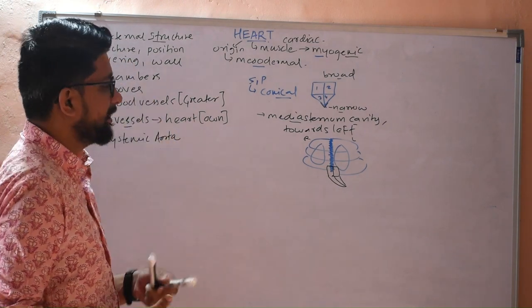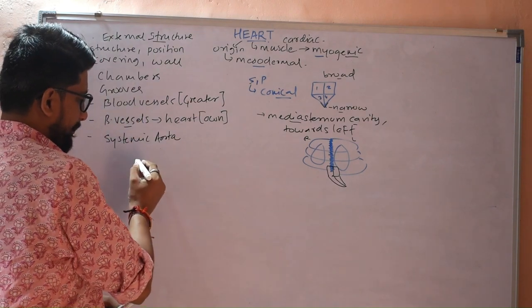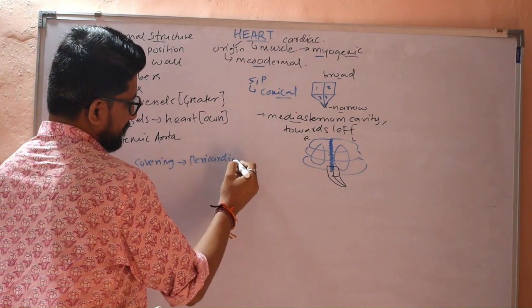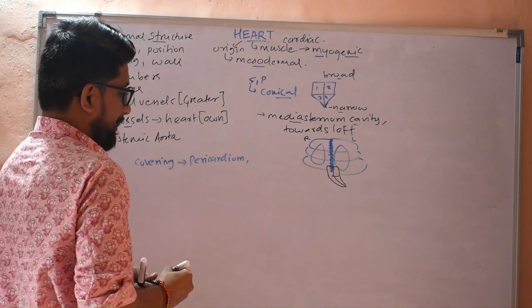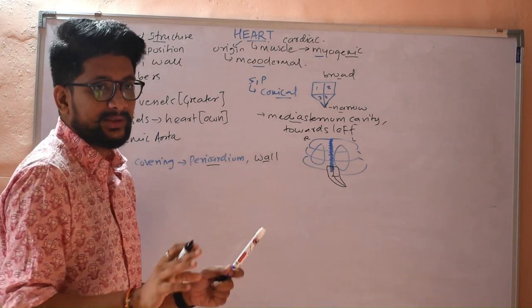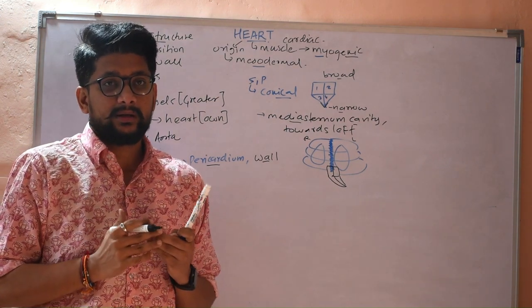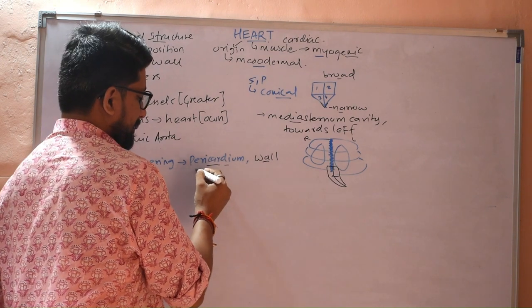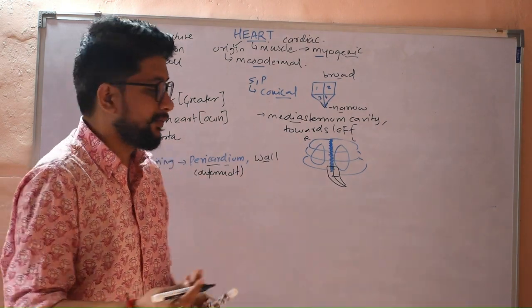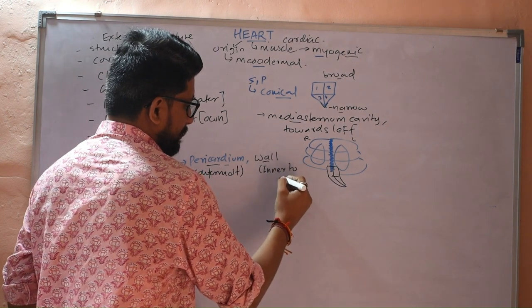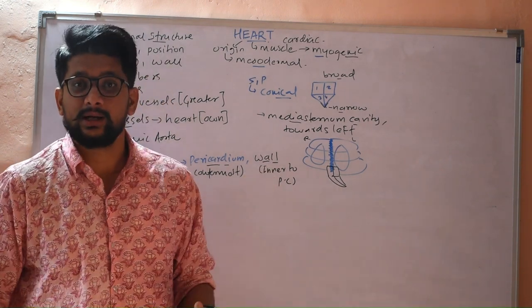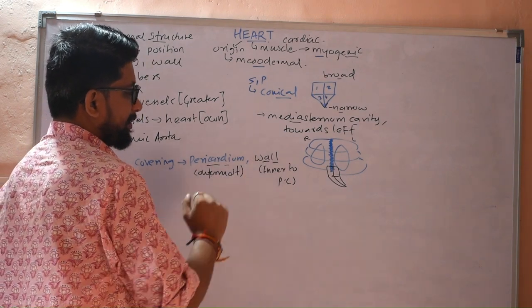The next point is covering and wall. When we talk about covering and wall, the outer covering of the heart is called the pericardium — it is the outermost part. Internal to the pericardium is the heart wall. These two things are very different: the pericardium structure is different and the wall structure is different.